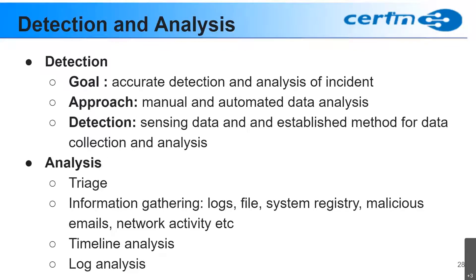Next is detection and analysis. When an incident is detected, the goal of this stage is for the C-CERT team to actively look for whether an incident is present in the organization. Accurate detection will then lead to starting the analysis.